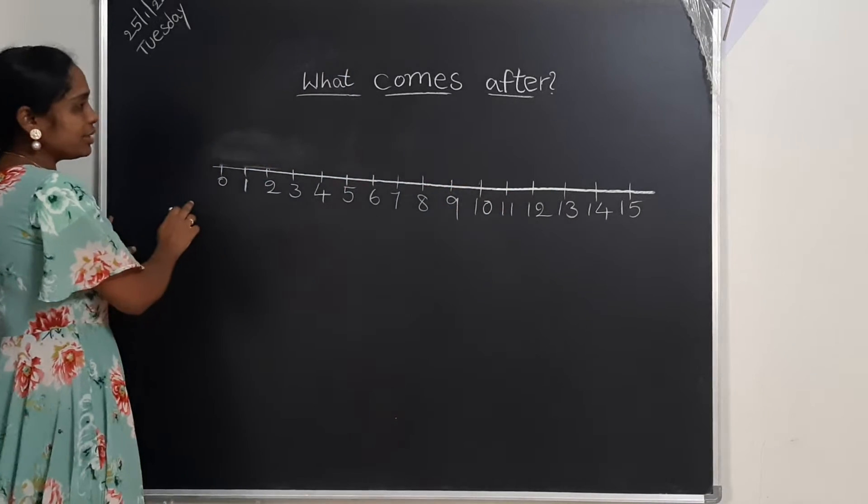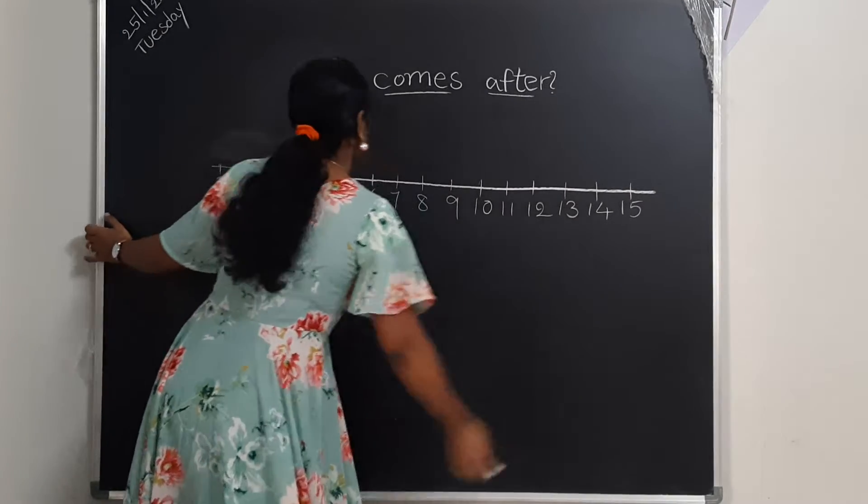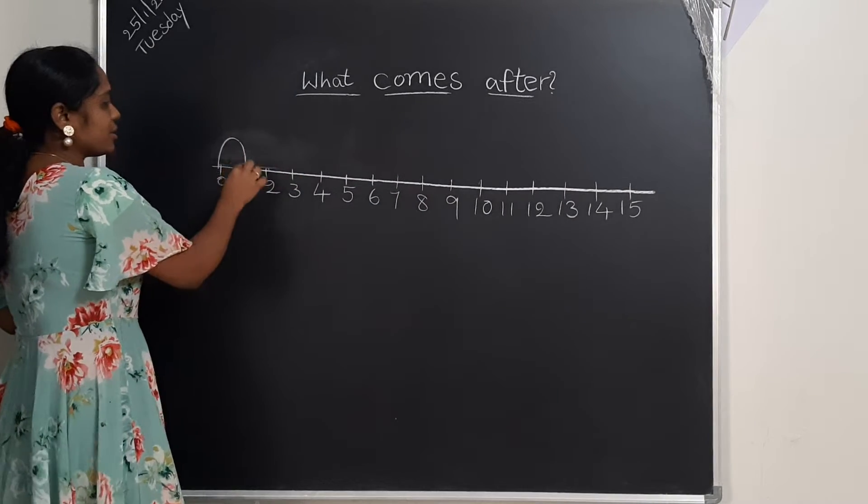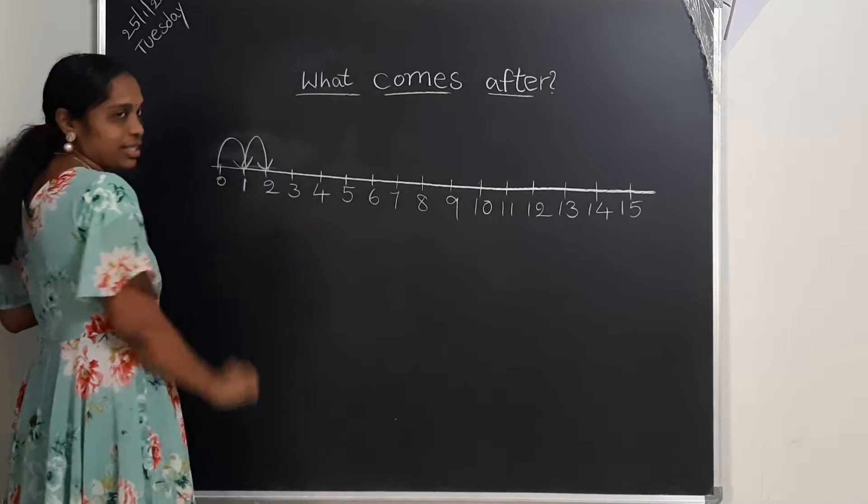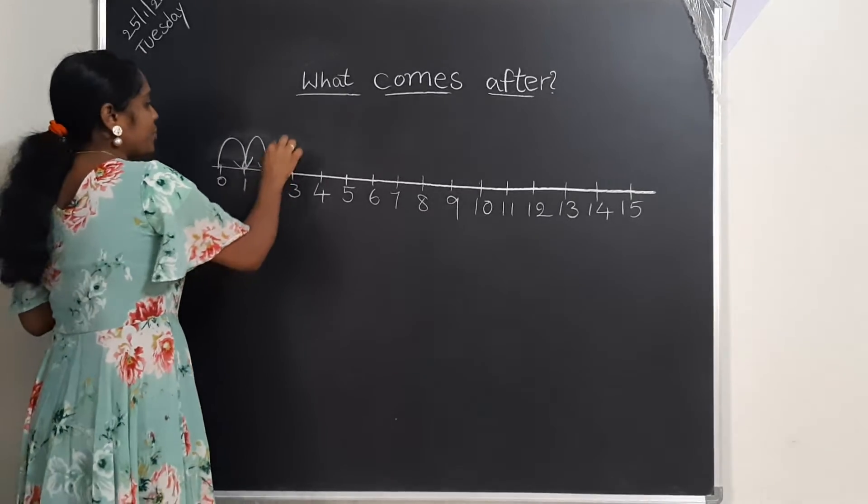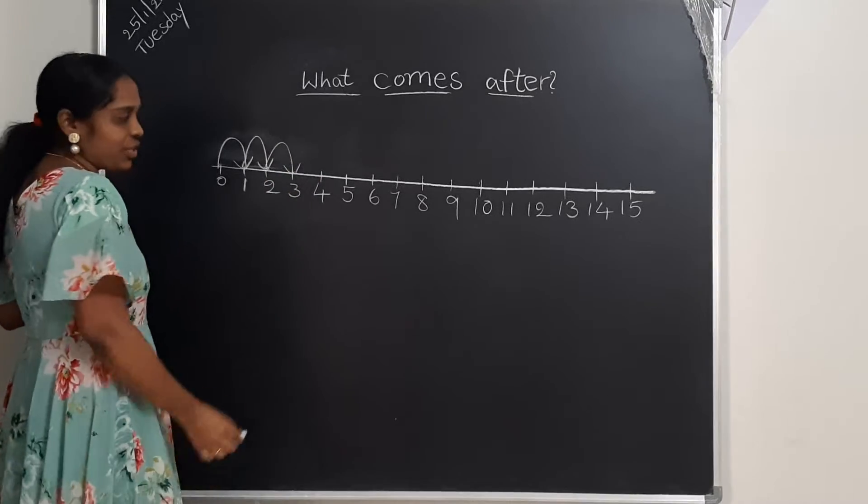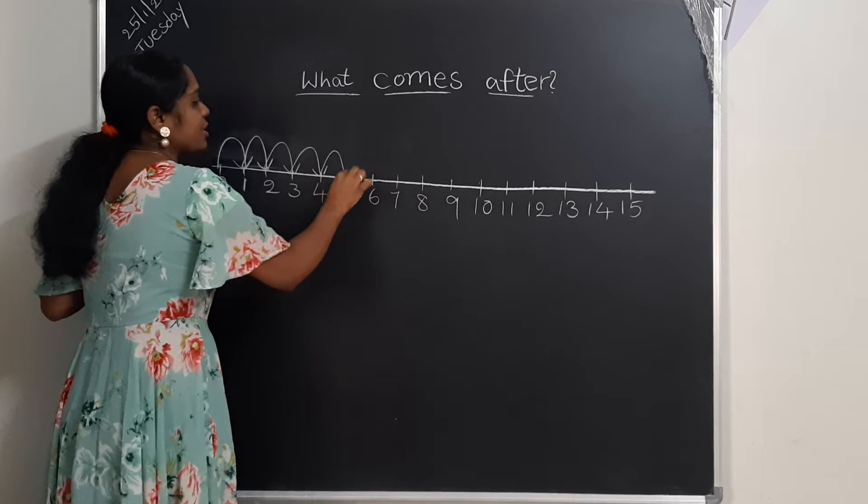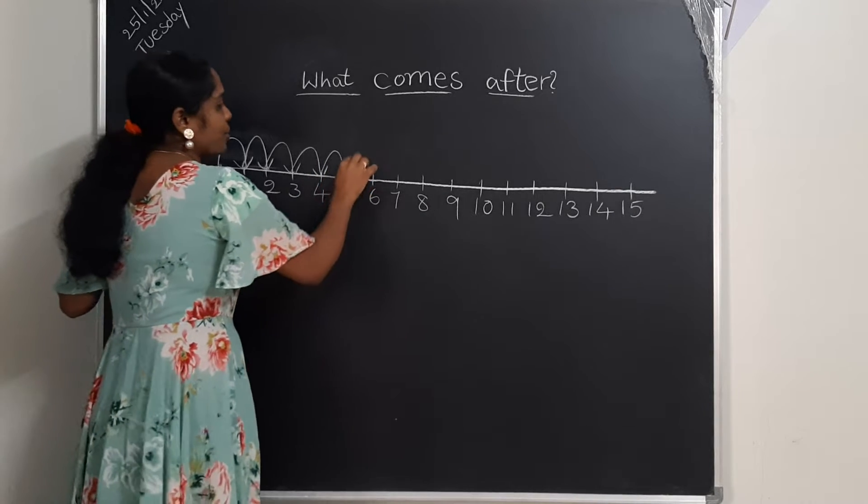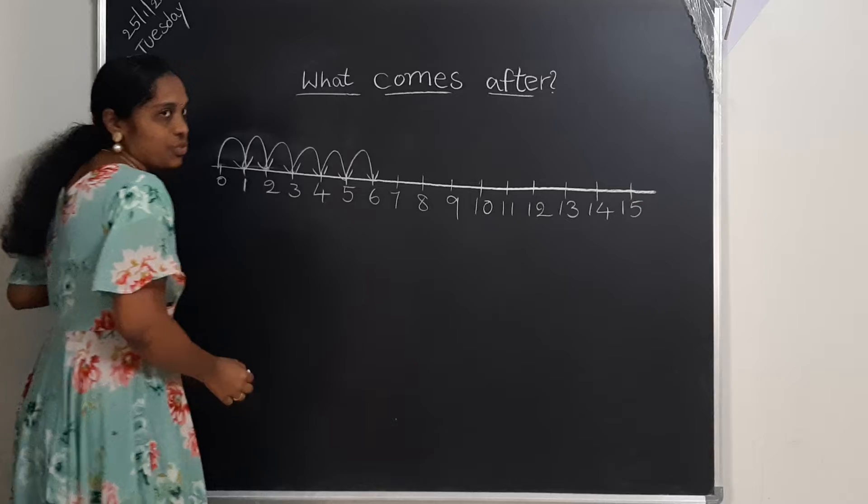So here are the numbers 0 to 50. 0 after 1. You already know it very good. 1 after 2, 2 after 3, 3 after 4, 4 after 5.